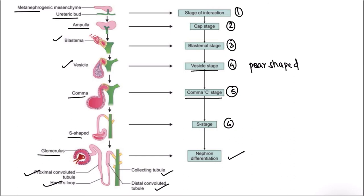To revise: the first stage is the stage of interaction, where the metanephric tissue and ureteric bud come into contact. Second is the cap stage with ampulla formation. Third is the blastemal stage with blastema formation. Fourth is the vesicle stage with a pear-shaped vesicle. Fifth is the comma-C stage with a comma-like structure. Sixth is the S stage, where the S-shaped structure differentiates into the glomerulus, proximal convoluted tubule, loop of Henle, distal convoluted tubule, and collecting duct — forming the nephron.